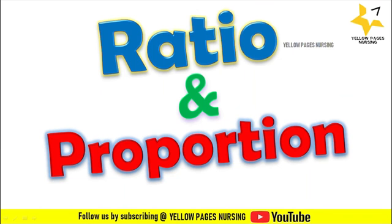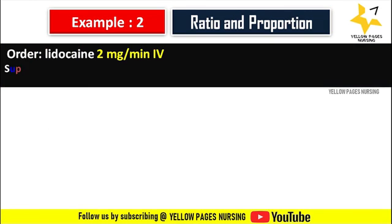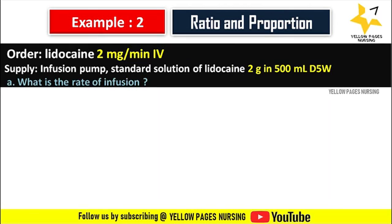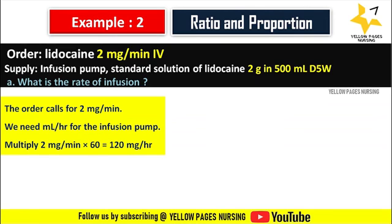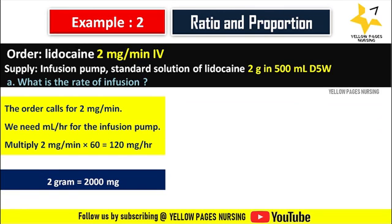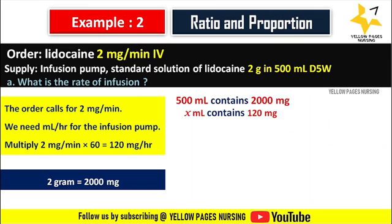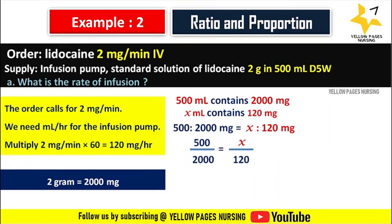The example: doctor's order lidocaine 2 mg per minute IV, supply infusion pump, standard solution of lidocaine 2 gram in 500 mL D5 water. What is the rate of infusion? The order calls for 2 mg per minute; we need mL per hour, so multiply 2 mg/min × 60 = 120 mg per hour. 2 gram in 500 mL equals 2000 mg in 500 mL. Therefore: 500 mL contains 2000 mg; X mL contains 120 mg. Setting up the proportion: 500 ÷ 2000 = X ÷ 120.